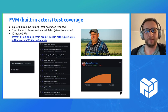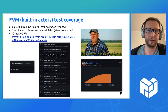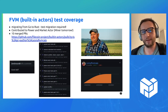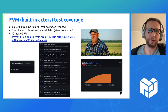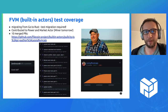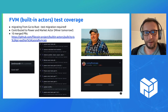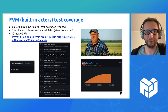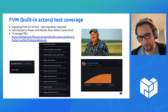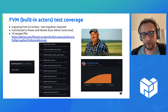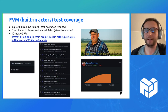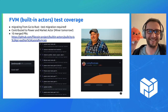Basically, I was translating tests that were previously written in Go into Rust, into this repository. I contributed to the power and market actor. Over the last two weeks, I'm going to start working on the miner actor tomorrow. Got 10 PRs merged, and the feedback from the maintainers was rather positive. More or less 1,000 lines of code added, 1,000 lines of code modified. So yeah, that's my contribution — peace is Rust everywhere. Thank you very much.